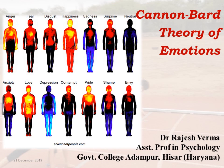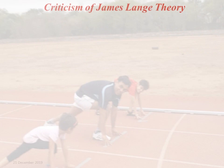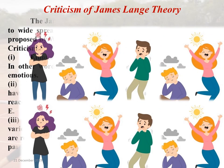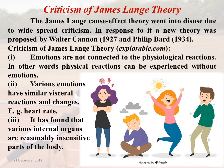Let us move to our today's discussion. We will focus more on the Cannon-Bard theory of emotions. Before starting, we have to understand why the theory is important and why it is required. We need to have a critical review of the James-Lange theory. The James-Lange theory was in fact a cause-effect theory that went into disuse due to widespread criticism by scholars and researchers. In response to this criticism, a new theory was proposed by Walter Cannon and Philip Bard in 1927 and 1934, and since their proposals were similar, they were combined into what is now known as the Cannon-Bard theory of emotions.